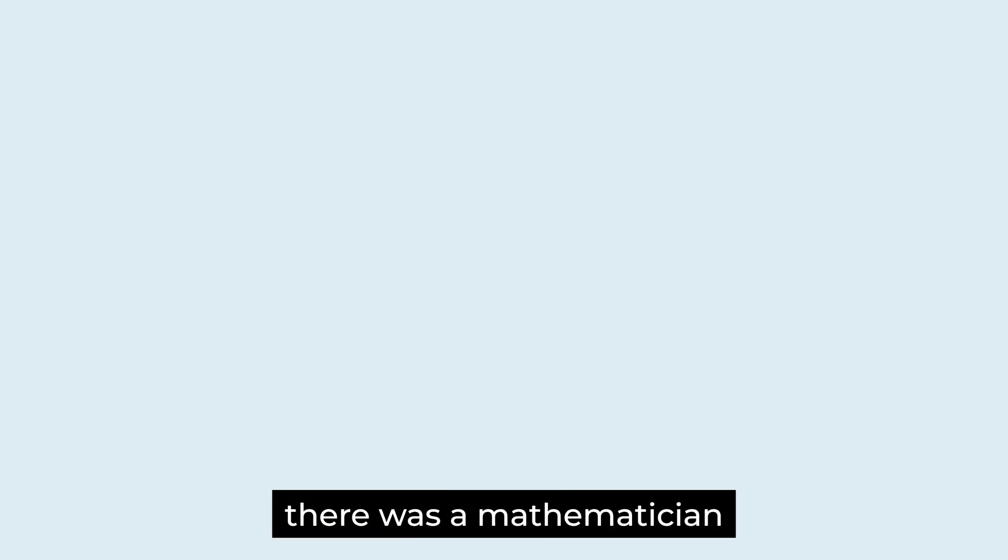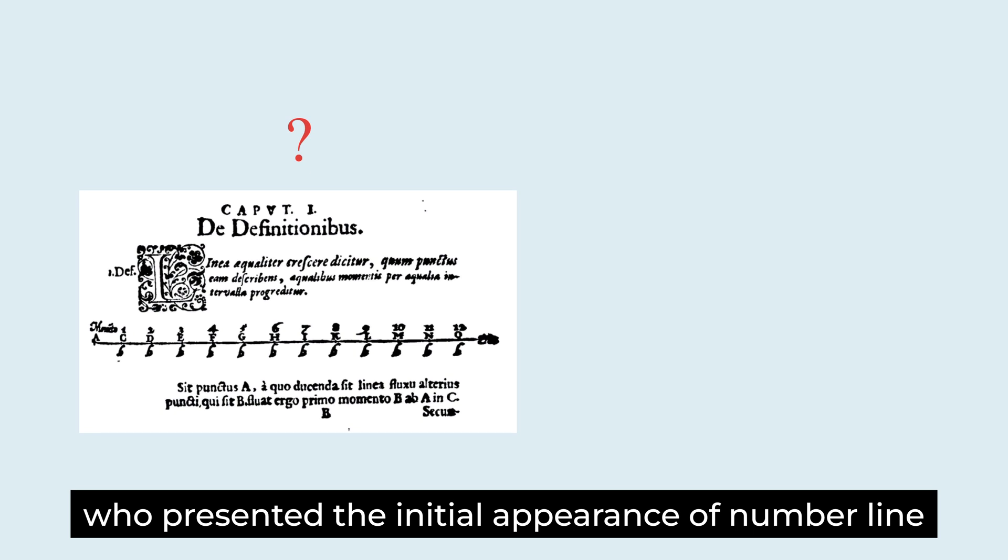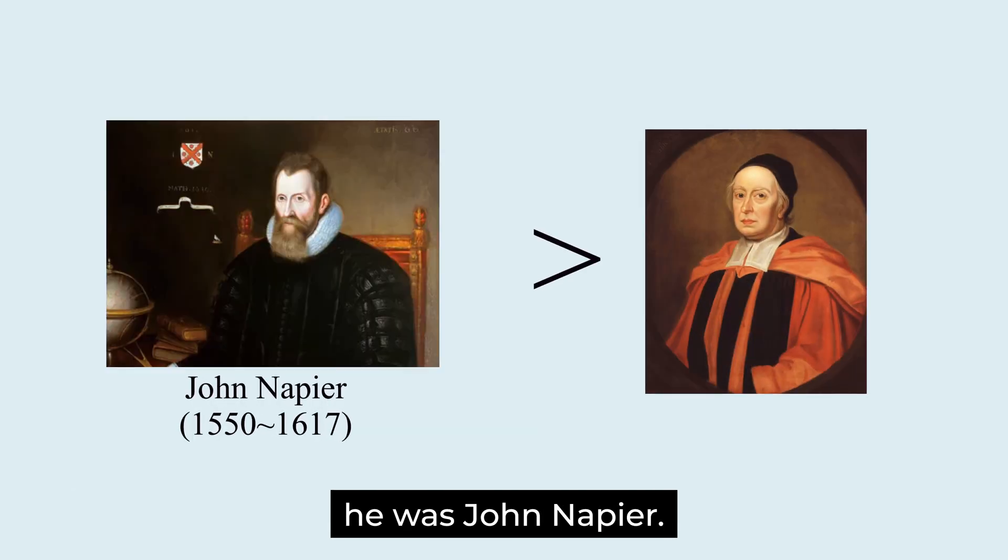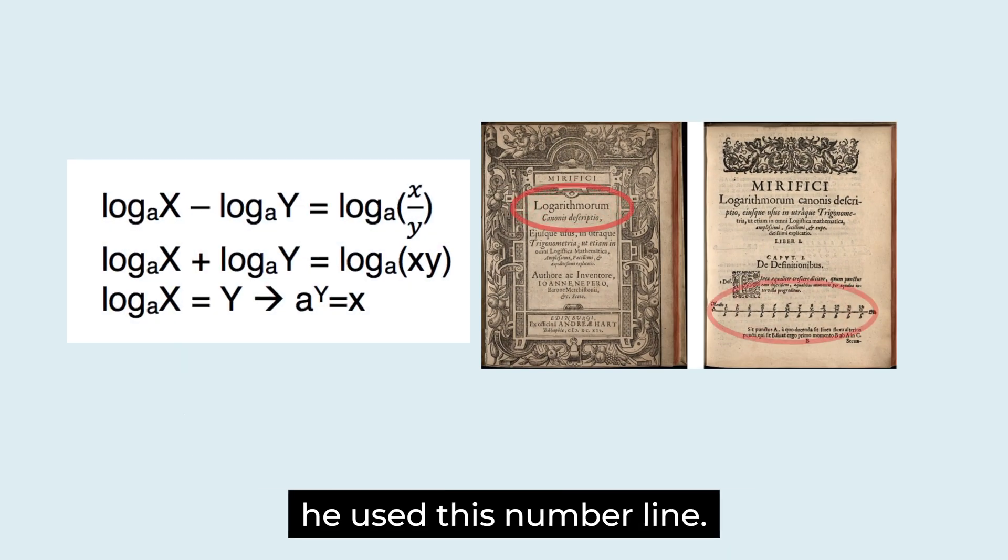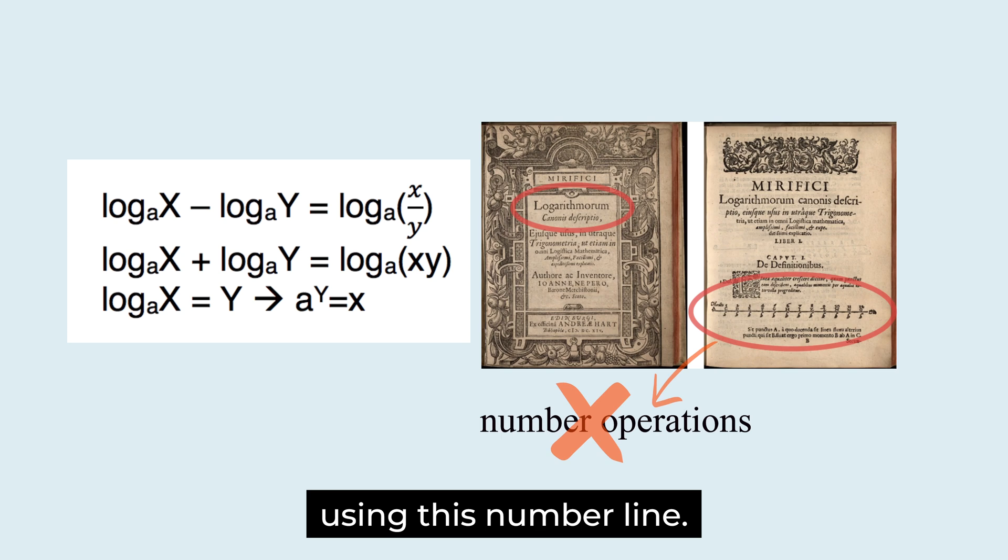In fact, there was a mathematician who presented the initial appearance of number line before John Wallis. He was John Napier. In 1616, when he explained logarithm, he used this number line. However, he didn't explain the number operations using this number line.